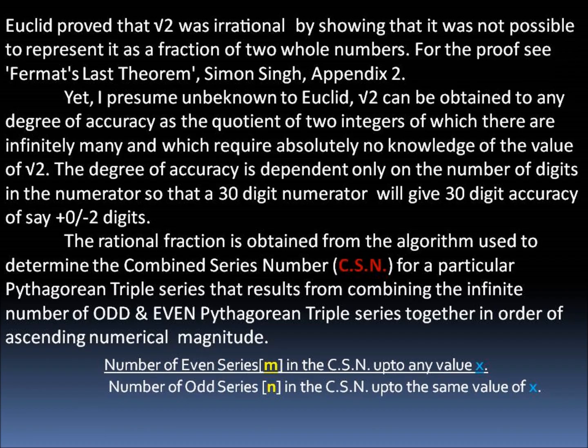Yet, I presume, unbeknown to Euclid, root 2 can be obtained to any degree of accuracy as the quotient of two integers, of which there are infinitely many, and which require absolutely no knowledge of the value of root 2.